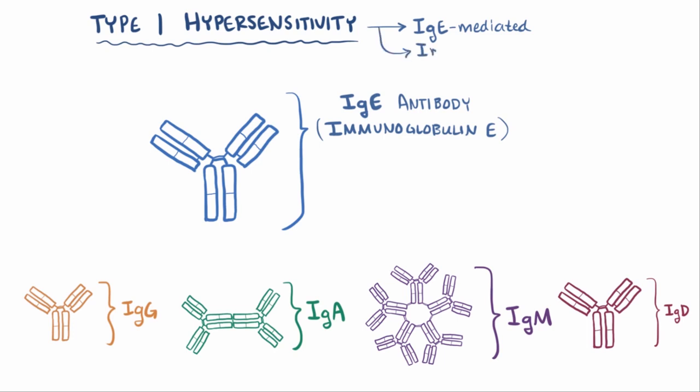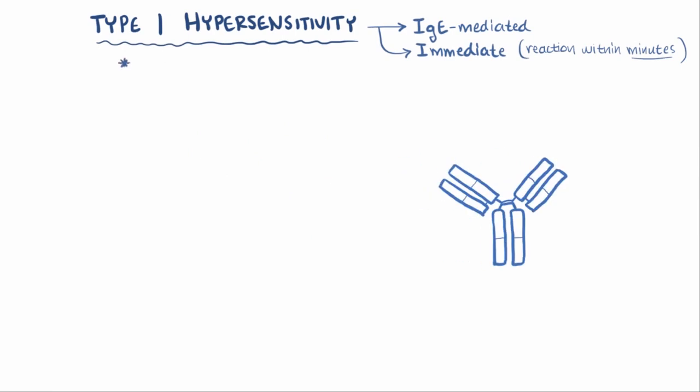This type of reaction is also sometimes called immediate hypersensitivity because the reactions happen super fast, on the order of minutes. Most allergic reactions are IgE-mediated, and therefore most allergies are Type 1 hypersensitivity reactions.